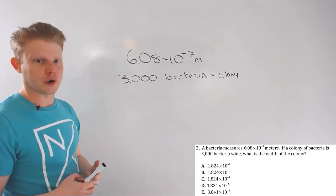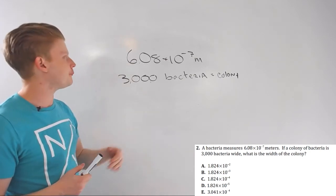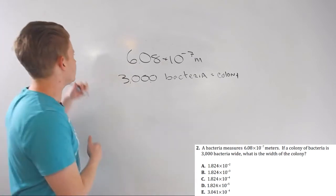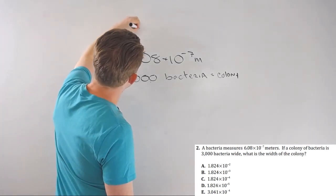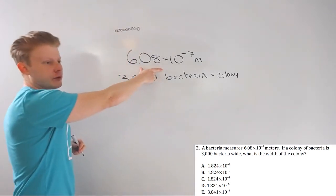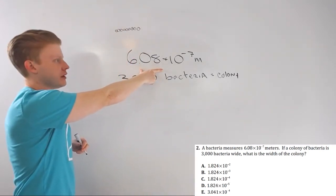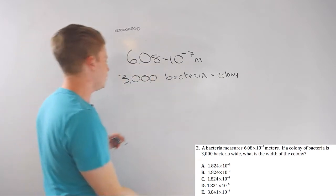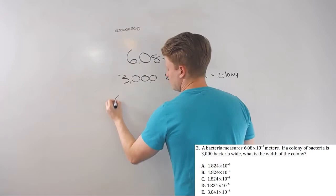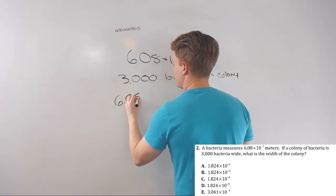The first thing to do is figure out what operation you're going to use. If it's 3,000 wide, it's like this, right? So, you could add this 3,000 times, but repeated addition is just multiplication. So, really, all I'm going to do is multiply this times 3,000. So, I can set that up. And we'll talk about two ways to do this.